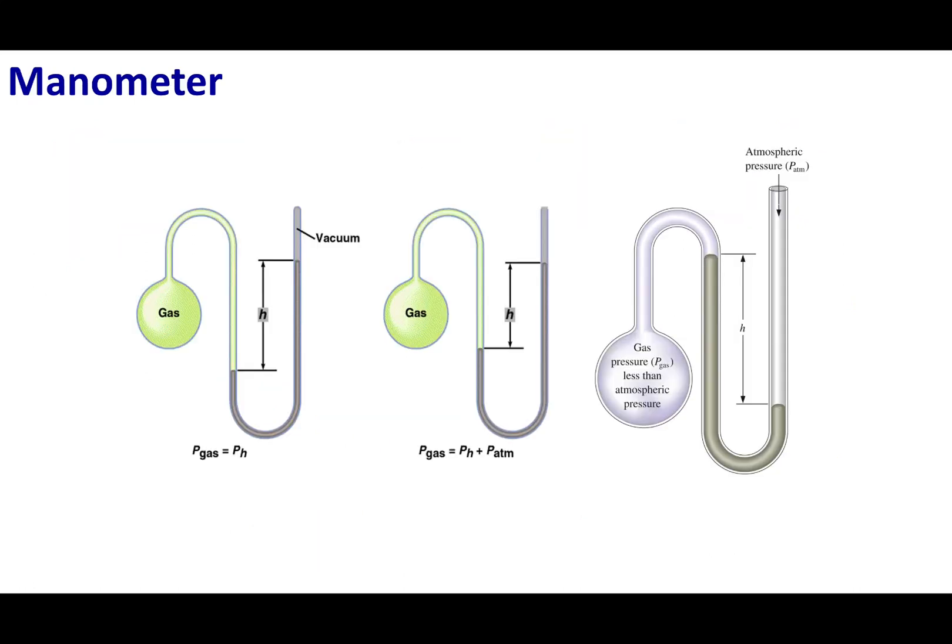Let's talk about measuring pressure. One common device is something called a manometer. What a manometer is going to do is I'm going to have this tube in a U shape. I'm going to fill mercury in this tube. If nothing is pushing down on this mercury, the mercury would be at an even level.